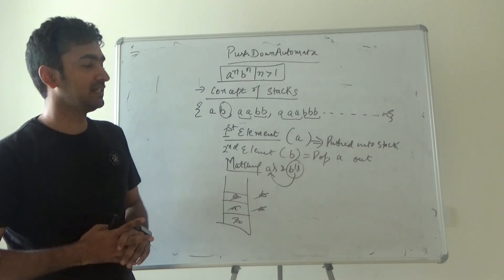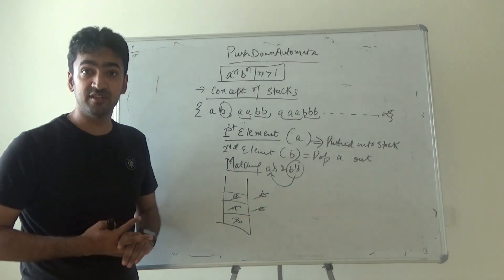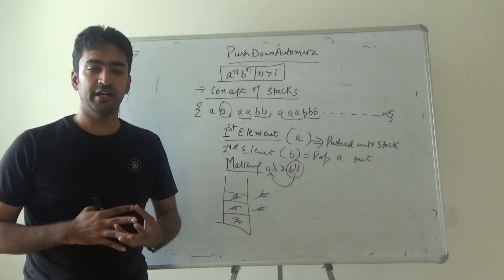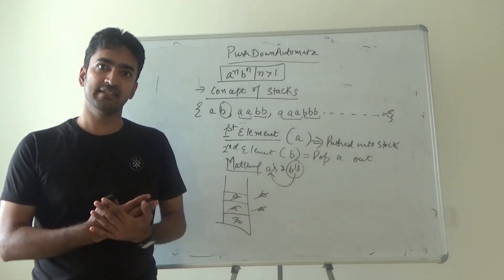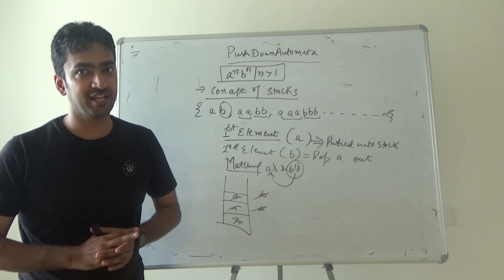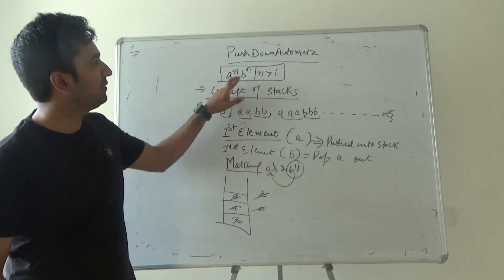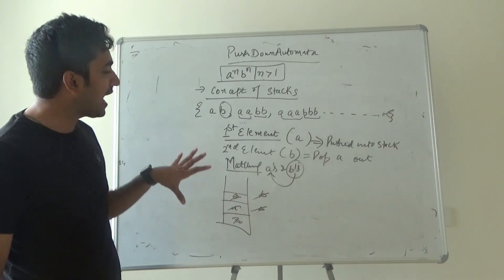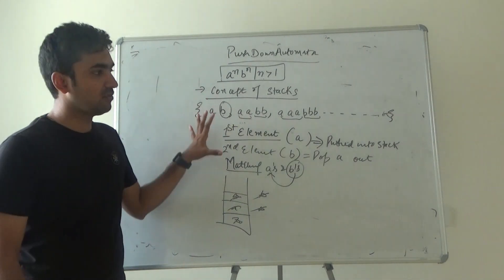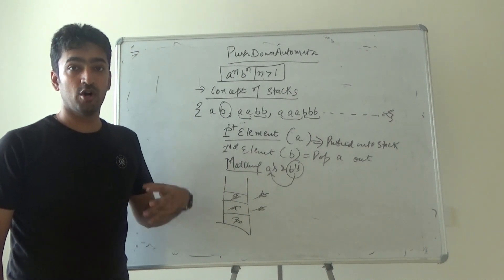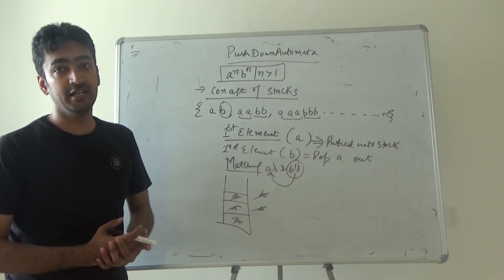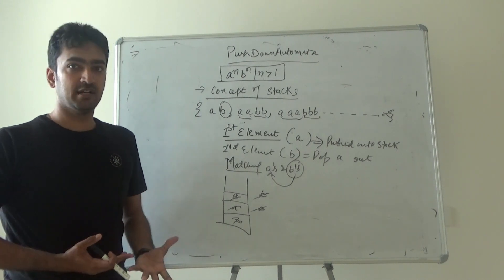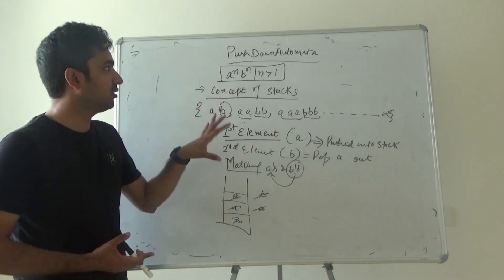This process is done using pushdown automata and that is the basic advantage it has that it can accept what finite automata cannot. This a bar and b bar n in upcoming videos will be accepted by pushdown automata. The model you have to study it properly because there are certain many operations that will be studied in pushdown automata.